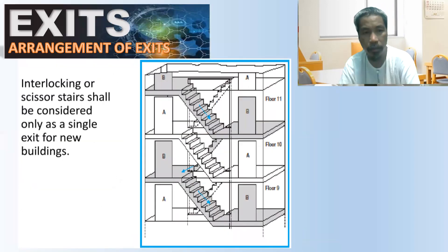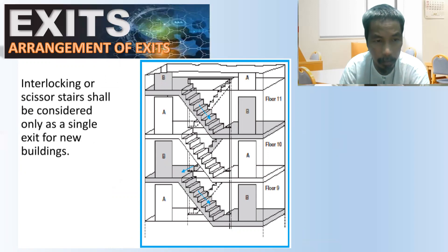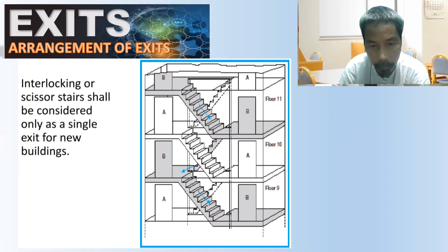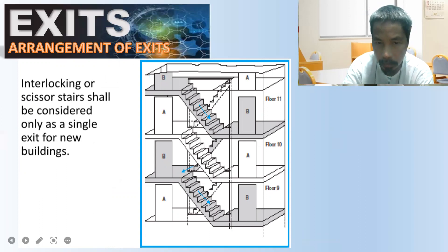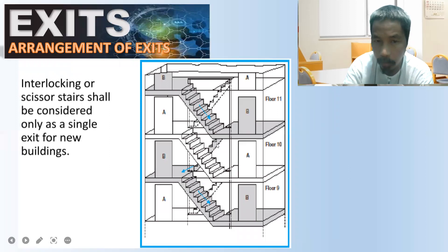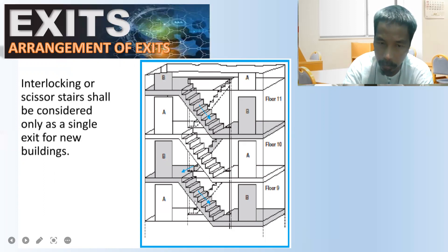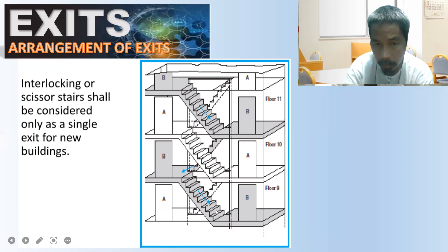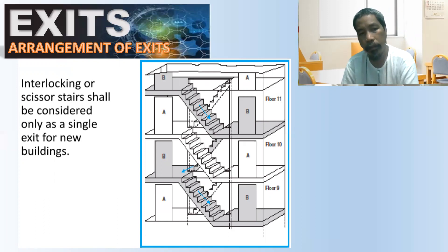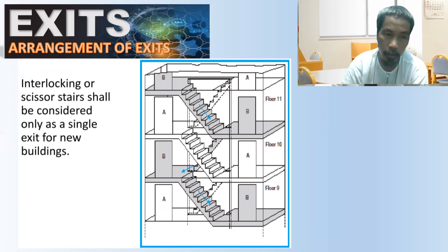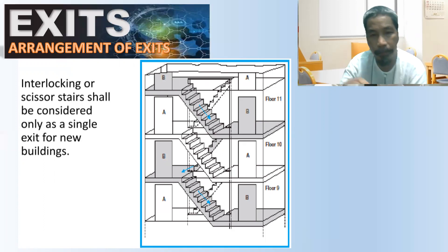Interlocking or scissor stairs shall be considered only as a single exit for new buildings. One flight goes down while the other also goes down — one set is going up (shown in white) and the other going down (shown in gray). Because of this, they count as only one exit for new buildings, so you must select either stair A or stair B.